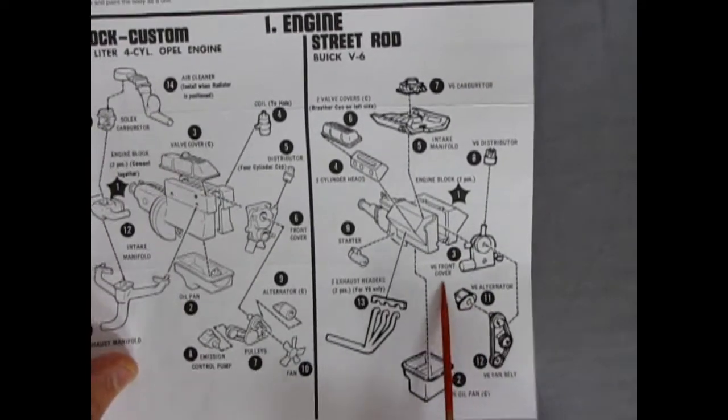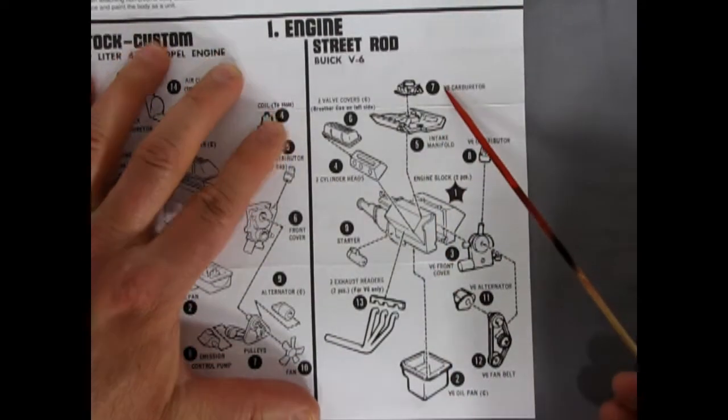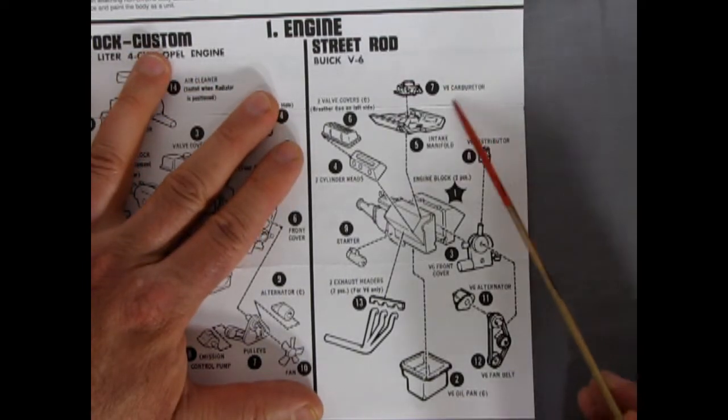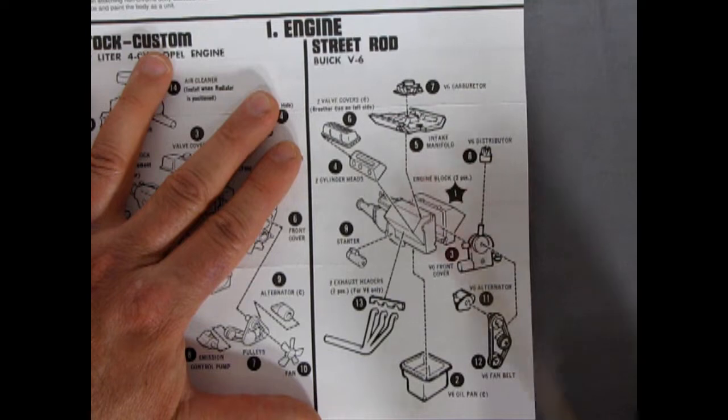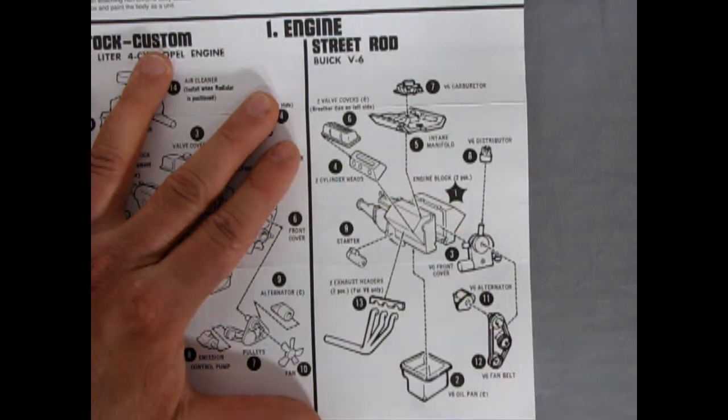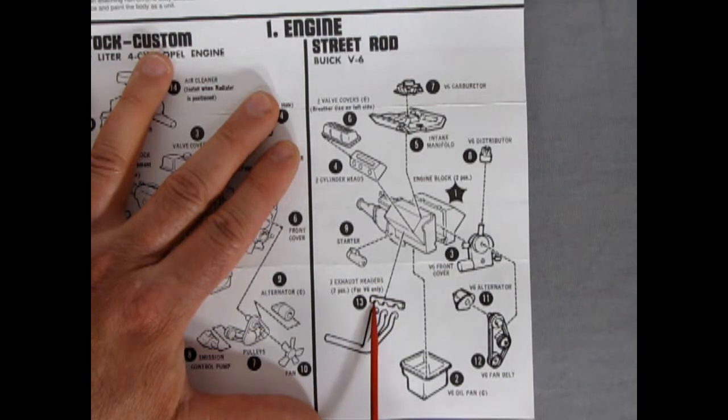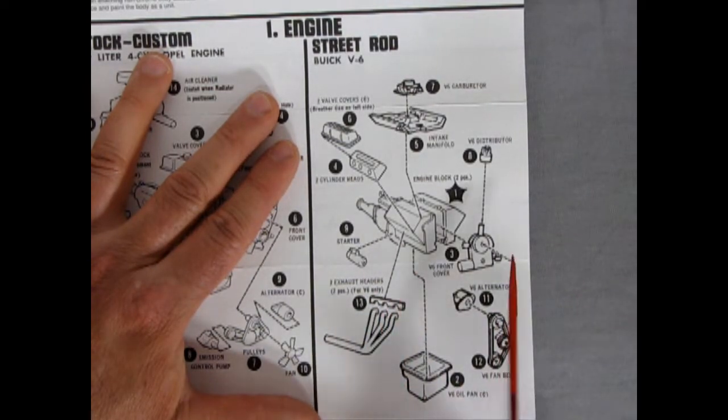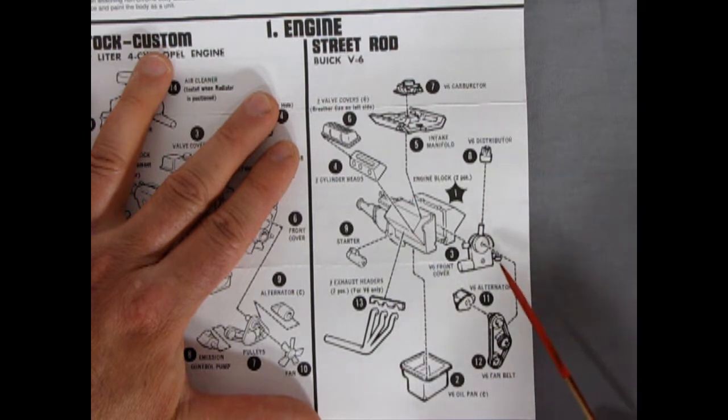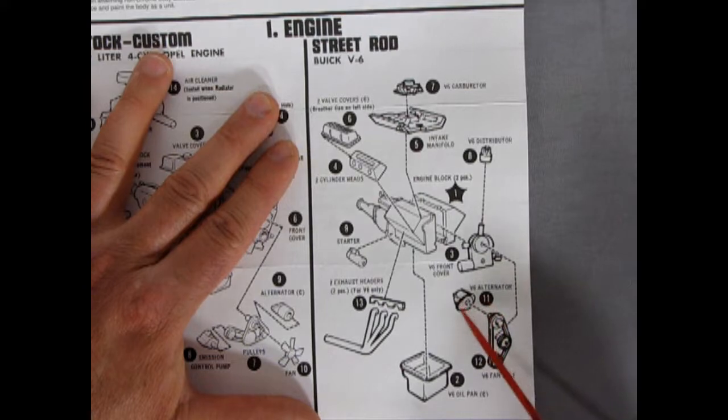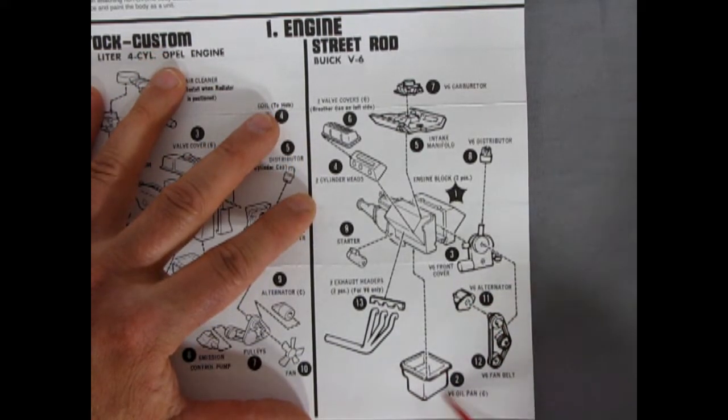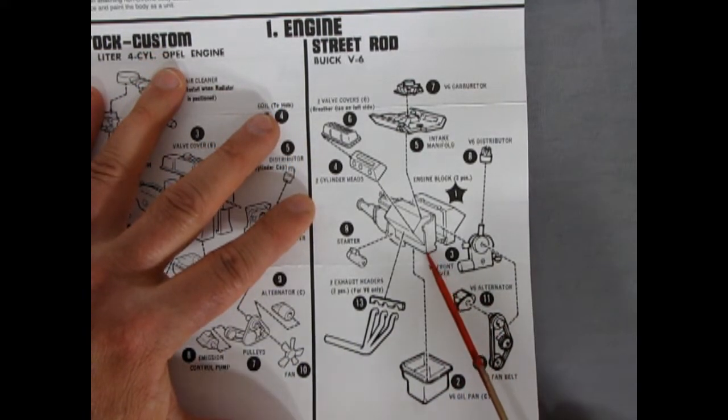Then as we move over here for our street rod, we do get the Buick V6 with a V6 carburetor, the intake manifold, chrome valve covers on both sides, cylinder head, the two engine blocks with the transmission molded to the back. Then we have the starter, exhaust headers with the little plate you have to glue on, a V6 distributor, the front cover, the alternator, the fan belts, and this little box style oil pan which goes up underneath.